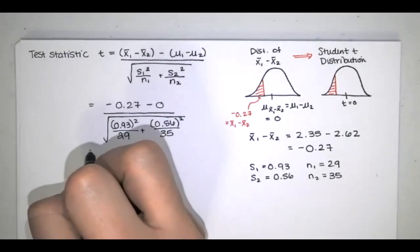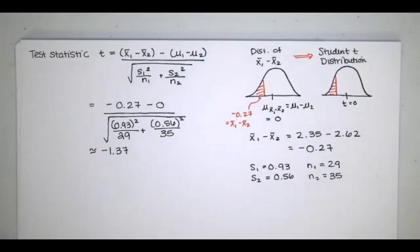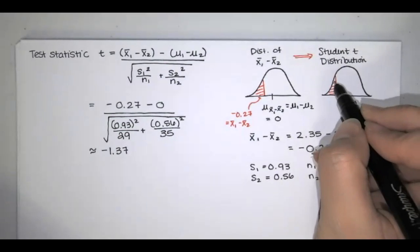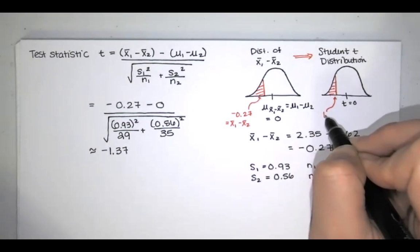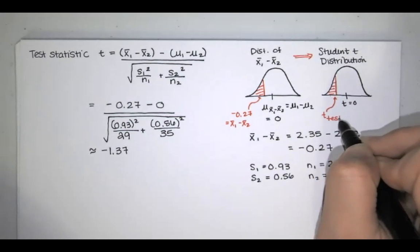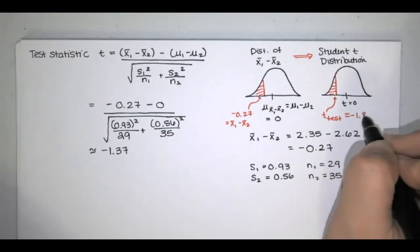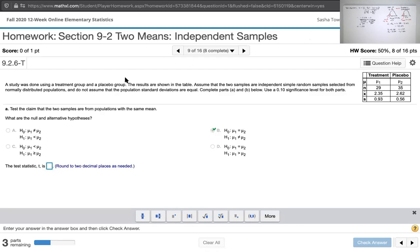This is not exactly a number of standard deviations below the mean, but it's similar to that. It's the t score that corresponds to the area to the left for the right number of degrees of freedom. So our test statistic t is negative 1.37, and we're asking ourselves whether that is significantly high or significantly low. We enter that answer rounded to two decimal places: negative 1.37.